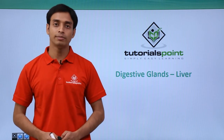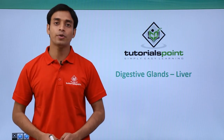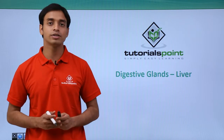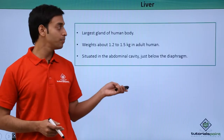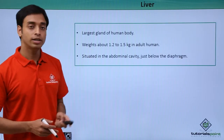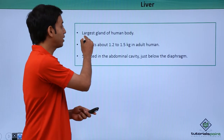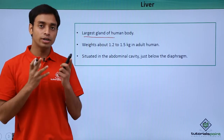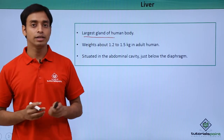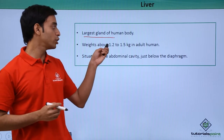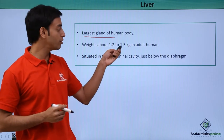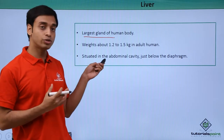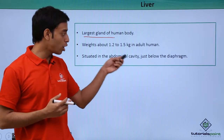Hello everyone, welcome to Tutorials Point. In this video we will be talking about a digestive gland which is the liver. The liver is the largest gland of the human body. In a typical adult human being, it weighs about 1.2 to 1.5 kg.